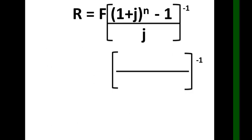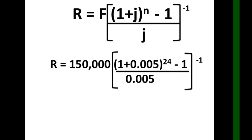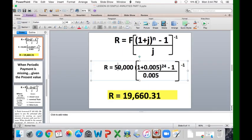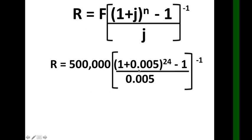Now let's substitute the given into the formula. We have F equals 500,000, times the quantity (1 plus 0.005) raised to 24, minus 1, over 0.005, raised to negative 1. Let's check if we get the correct answer.